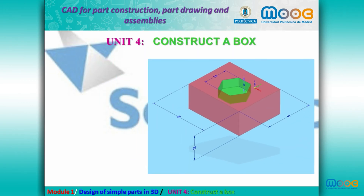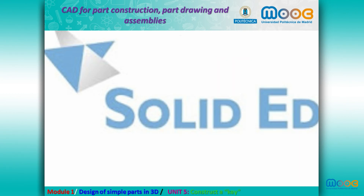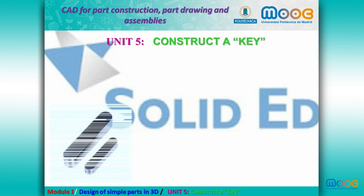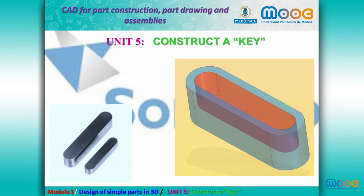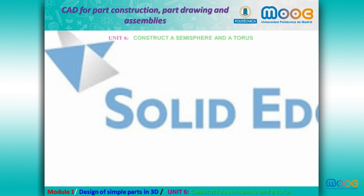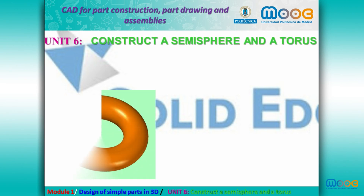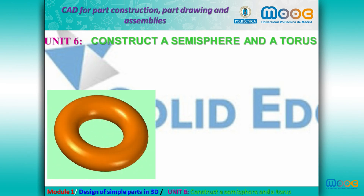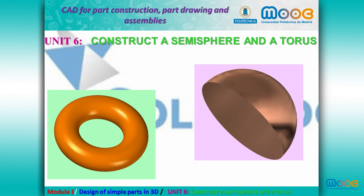Unit 4, we are going to construct this box with a hexagonal hole. Unit 5, we are going to construct a kind of key. Unit 6 is the construction of a semi-sphere and a torus.